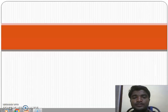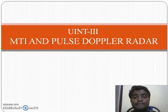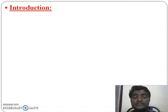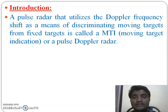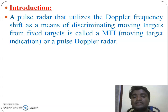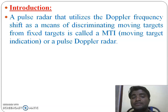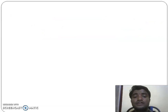Good morning, dear students. In today's class I'm going to start Unit 3, which is MTI and Pulse Doppler Radar. The aim of the MTI radar is to separate moving targets from stationary targets. A pulse radar that utilizes the Doppler frequency shift for separating moving targets from fixed targets is called an MTI radar. It is also called a Pulse Doppler radar.